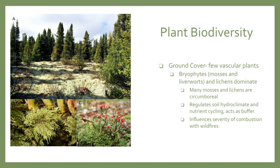As for ground cover, the boreal forest is limited on the number of vascular plant species. It's mainly dominated by bryophytes, or mosses and liverworts, and lichens. Many of the mosses and lichens are circumboreal, unlike the tree species — you can find them across the entire ecosystem. These help in regulating soil hydroclimate and nutrient cycling and act as a thermal buffer. Their ability to hold water protects the permafrost during dry summer conditions, and they're also an influence in severity of combustion with wildfires.